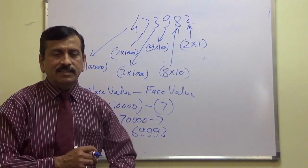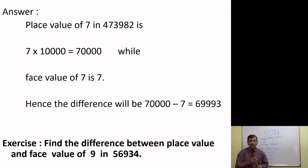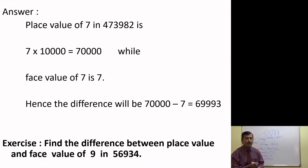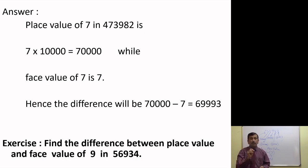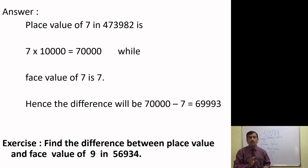The illustration is shown in the next slide. As a small exercise: find the difference between the place value and face value of 9 in the number 56934. The face value of 9 is 9. Identify its position — whether it is at the units, tens, hundreds, or thousands place — then multiply accordingly by 10⁰, 10¹, 10², 10³, or 10⁴.